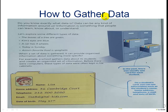How to gather data. Do you know exactly what data is? Data can be any kind of information around us. Information is something that people can learn, know about, or understand. When a set of data is gathered, it can provide organized information about something more specific. For example, a school gathered data about its students and created an organized set of information.